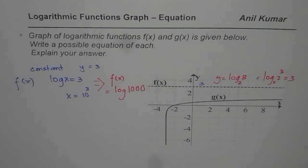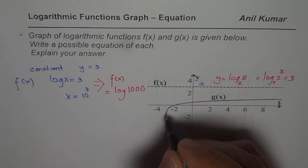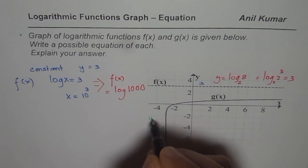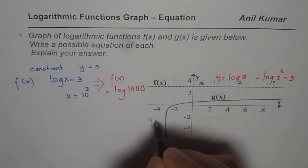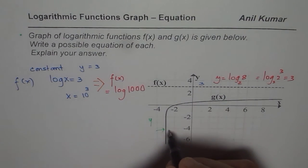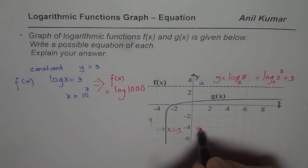Now let us look into the second function and try to write an equation for the second function. Now here what we see is that the, I should say, I should not say y-intercept. I am saying the vertical asymptote. I am sorry for that. Vertical asymptote is at x equals minus 3. So x equals minus 3 is the vertical asymptote.